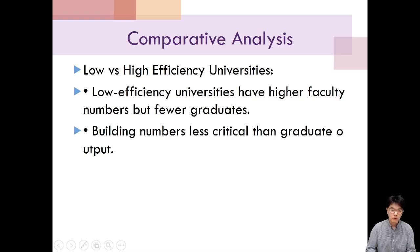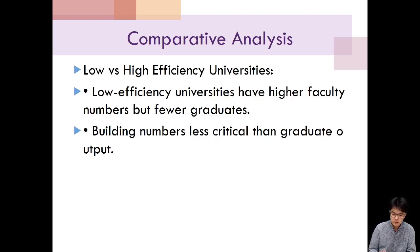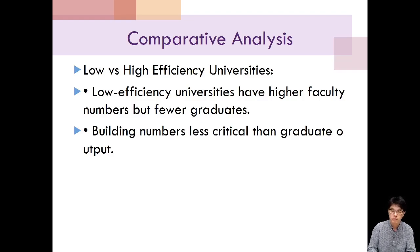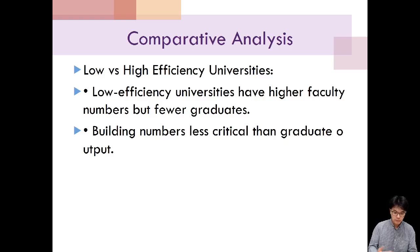In comparing low-efficiency universities with those that are more efficient, we noticed some clear differences. Low-efficiency universities typically have a higher number of faculty but fewer graduates, suggesting that resources are not being used optimally. Moreover, while the number of buildings is relatively high in low-efficiency universities, this factor does not appear to be as critical as the number of graduates. The key takeaway is that universities need to focus more on improving their faculty-to-student ratios and increasing graduate outputs to enhance their efficiency.